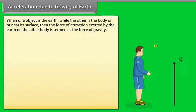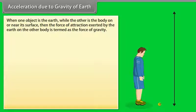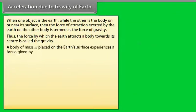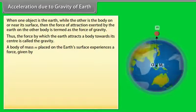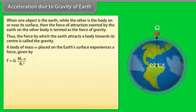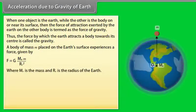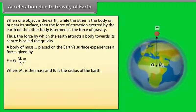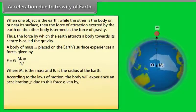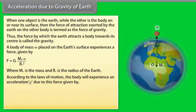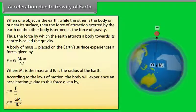Acceleration due to gravity of earth. When one object is the earth and the other is a body on or near its surface, the force of attraction exerted by the earth on the other body is termed the force of gravity. A body of mass m placed on the earth's surface experiences a force: F = G·Me·m / Re². The body experiences an acceleration g given by: g = G·Me / Re².